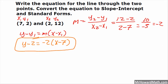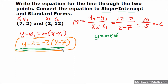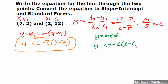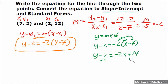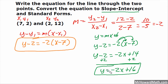Now slope-intercept. To write it in slope-intercept, we need the form y equals mx plus b. So that means we need y solved for. I am going to take the point-slope form and get y by itself. So y minus 2 equals negative 2 times the quantity x minus 7. Distribute the negative 2 in: y minus 2 equals negative 2x plus 14. Add the 2 to get y by itself. Final answer: y equals negative 2x plus 16. That is my slope-intercept form.